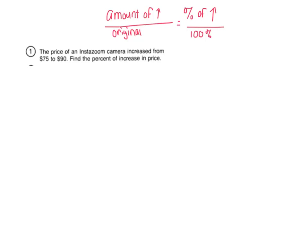Let's take a look at the first problem from your homework. It says the price of an InstaZoom camera increased from $75 to $90, and we want to find the percent of increase in the price.